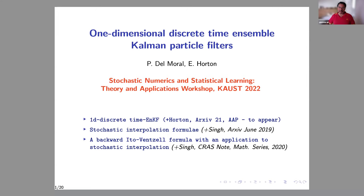Any algorithm depends on some precision parameter. You can always prove that every algorithm converges to the truth when the precision parameter tends to infinity. The problem is to obtain a uniform estimate with respect to the time parameter. In high-dimensional data assimilation, there are a few effective dimensions, meaning the signal may be high-dimensional but with only two, three, or four effective dimensions where the signal is unstable.